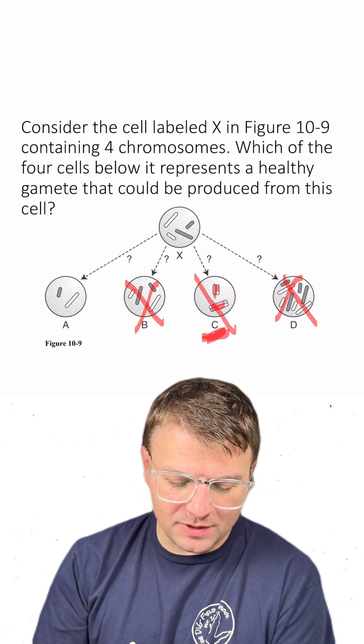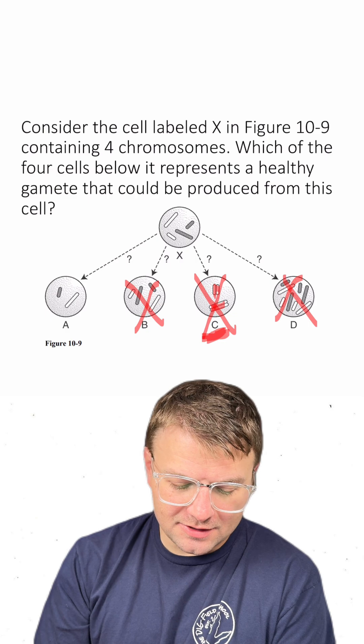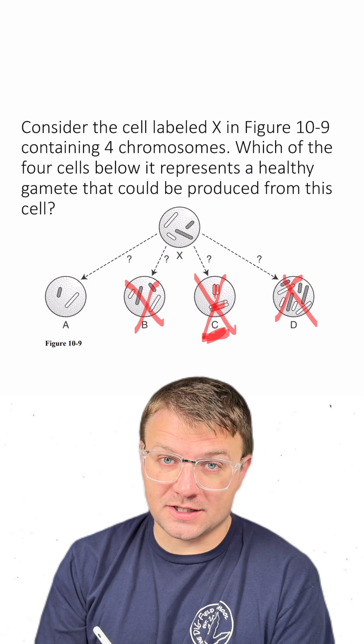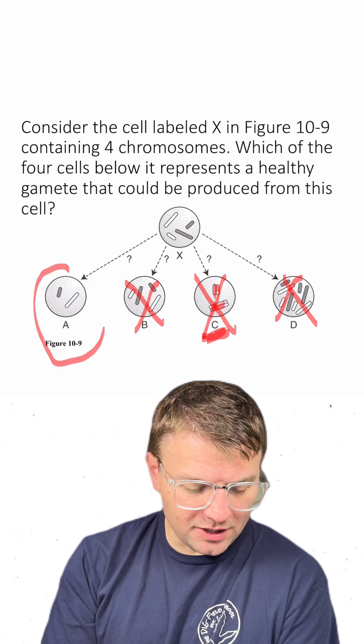So this cell would not be a possible healthy gamete since at the end of meiosis, we're going to have cells with one chromatid per chromosome.